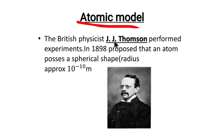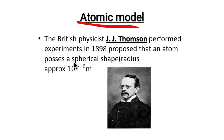J.J. Thompson, the British physicist, performed experiments in 1898 and proposed that the atom possesses a spherical shape. The atom has a spherical shape.